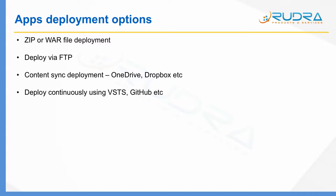You can put your web application content into a zip file or a WAR file and deploy it into Azure App Service. Similarly, you can deploy using FTP. There are two types of credentials you can use in order to FTP content into Azure App Service, which I'll cover in the next slide.